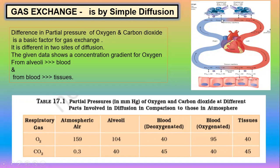Between the alveoli and tissues, gas exchange is carried out with the help of blood. In terms of partial pressure differences: oxygen in the alveoli air has a partial pressure of around 104 mmHg, while in the tissues it is lower, driving diffusion.